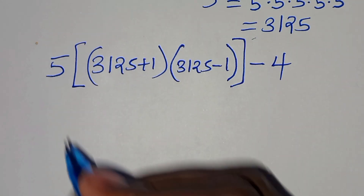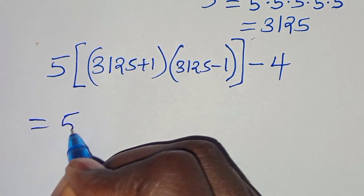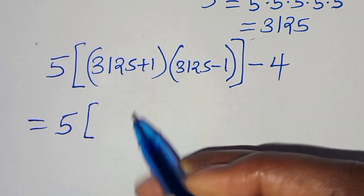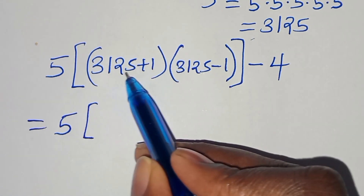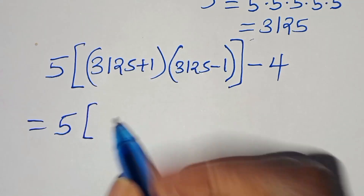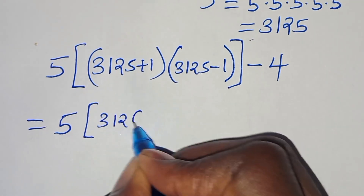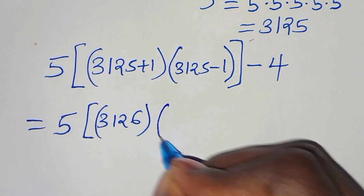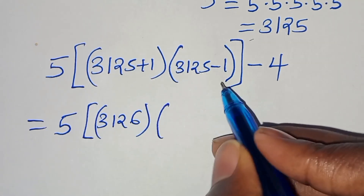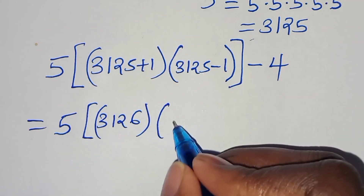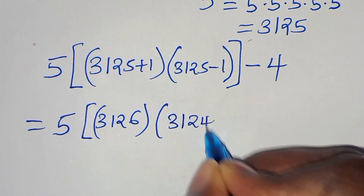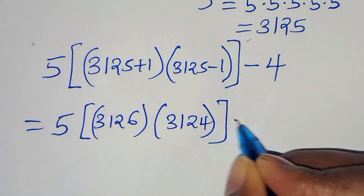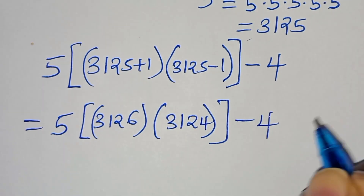So we have 5 times (3126 multiplied by 3124), then minus 4. We can express 3126 as 3100 + 26, and 3124 as 3100 + 24.